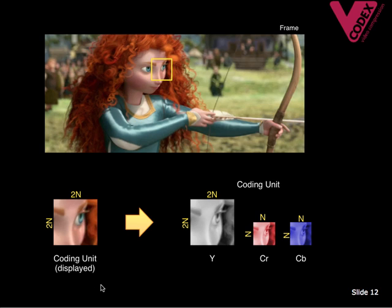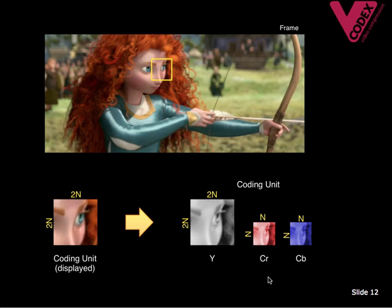Inside the video codec, this will typically be stored and processed as three components. Y is the luma or brightness of the displayed pixels. CR and CB are the red and blue color difference components. You can see that the CR and CB components are stored using half the resolution of the Y component. One reason for this is that the human eye is more sensitive to brightness than to color, so it makes sense to store the color difference components at a lower resolution.